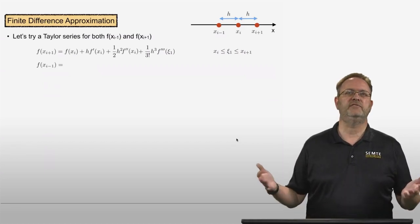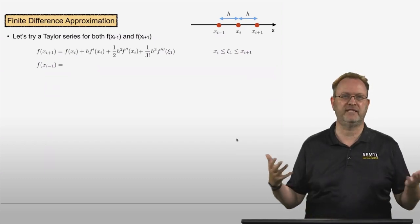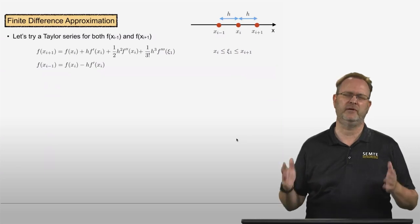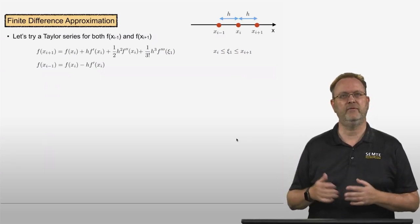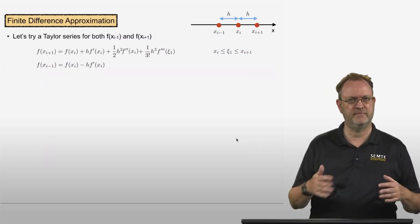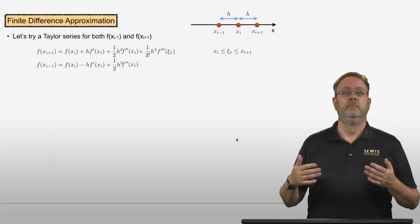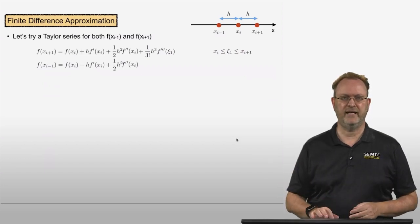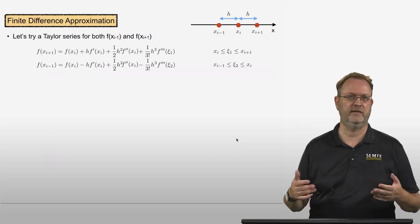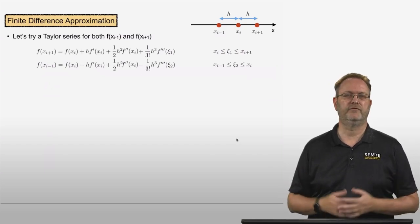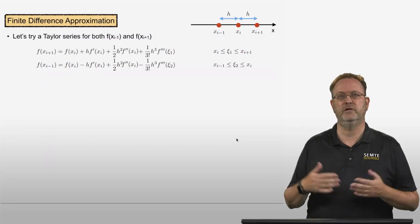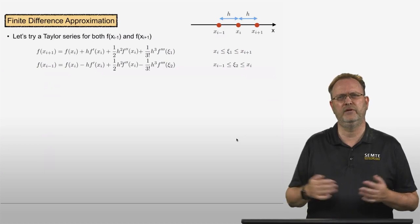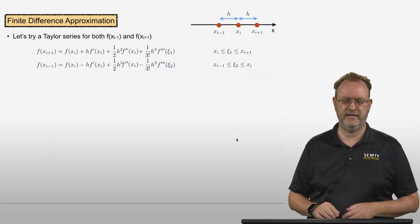Now let's do the Taylor series expansion for the neighboring point to the left. f of xi minus 1 would be equal to f of xi minus h times f prime at xi, plus one half h squared f double prime of xi, minus one over 3 factorial times h cubed times f triple prime evaluated at an unknown location psi 2. The only thing we know is that it's between xi minus 1 and xi.